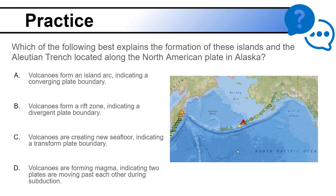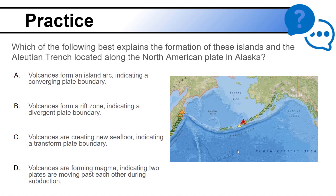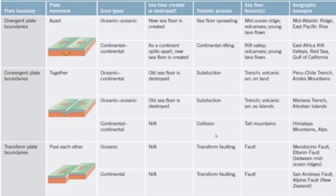Let's practice. Which of the following best explains the formation of the islands and the Aleutian Trench located along the North American Plate in Alaska? If you picked A, you are correct. Volcanoes form an island arc, indicating a convergent boundary. This volcanic island arc is created as the Pacific Plate is being subducted underneath another oceanic plate, creating this deep sea trench and the whole volcanic arc of islands. Here's a fantastic chart summarizing what we learned — feel free to pause and review.